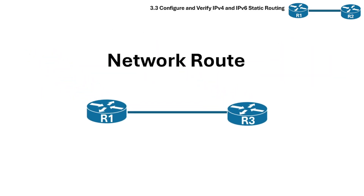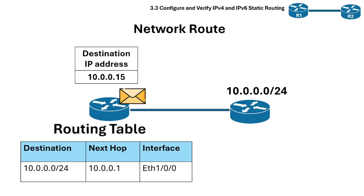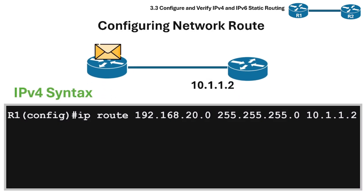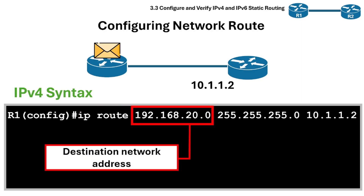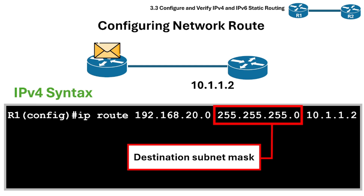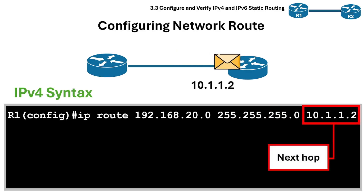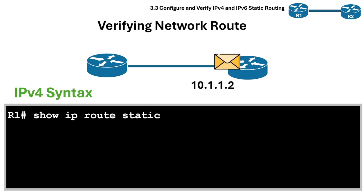Next is the network static route. A network route is a static route that points to an entire network, not just one host. A real-world use case would be: Branch A router knows how to reach Branch B's network through the WAN link. To configure network routes in IPv4, the 'ip route' command is used. 192.168.20.0 is the destination network address, 255.255.255.0 is the subnet mask, and 10.1.1.2 is the next-hop router IP to reach that network. To verify, use the command 'show ip route static'.